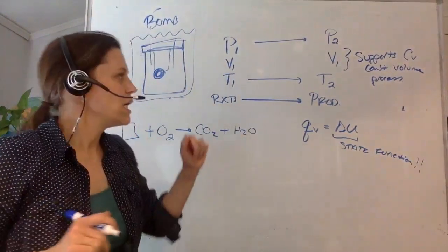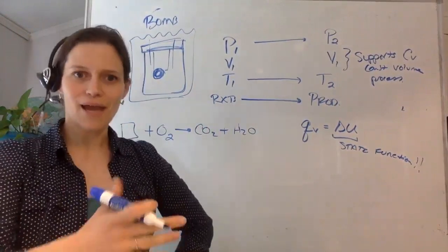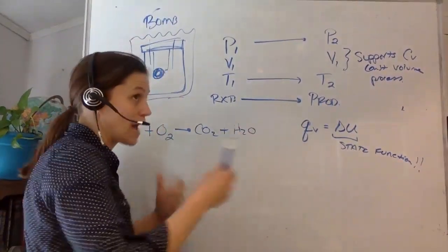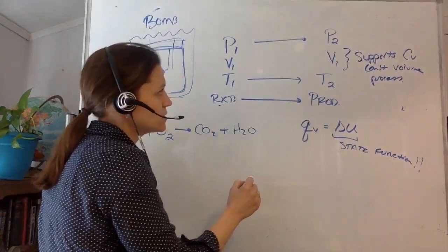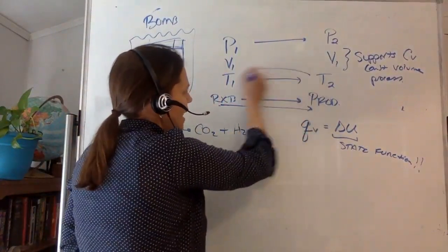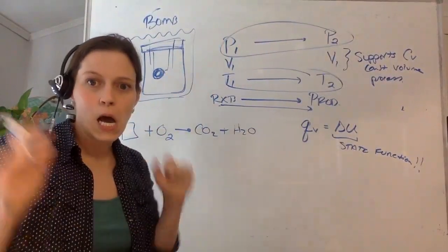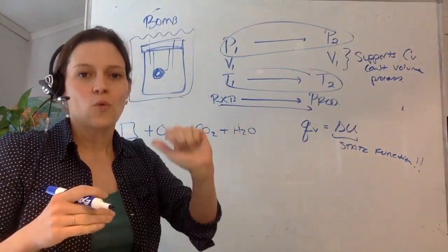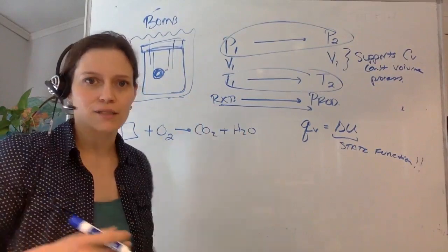Do you recall that I told you that we were using state functions? Q under constant volume is equal to delta U — this is a state function. What does that mean? Well, it means it's path independent; it doesn't matter the path we follow. The reason — so how do we use that? We want to get from reactants to products. If I'm going to get from here to here, I can add together this process plus this process. So I'm going to break this down into two steps: one at constant pressure and one at constant temperature, and then we're going to add those together.